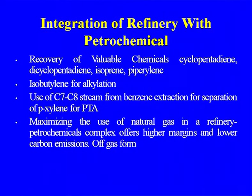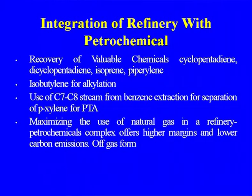Valuable chemicals to be recovered include cyclopentadiene, dicyclopentadiene, isoprene, and piperylene from cracker streams. There is significant scope especially for isoprene and cyclopentadiene recovery. Isobutylene from C4 fractions for alkylation, and use of C7/C8 streams from benzene extraction, offer further opportunities. Maximizing use of natural gas in a refinery-petrochemical complex offers higher margins and lower carbon emissions.